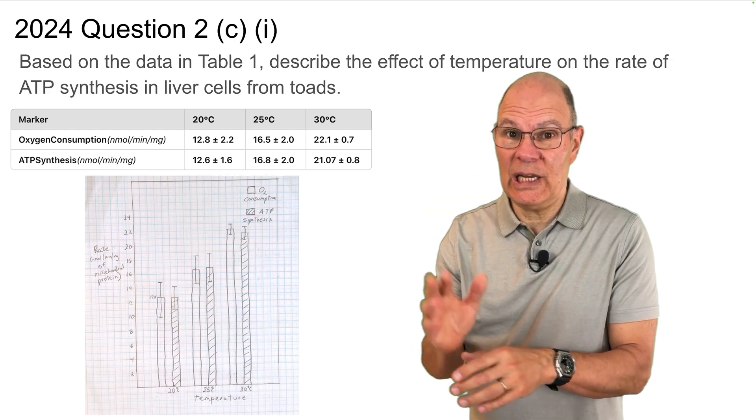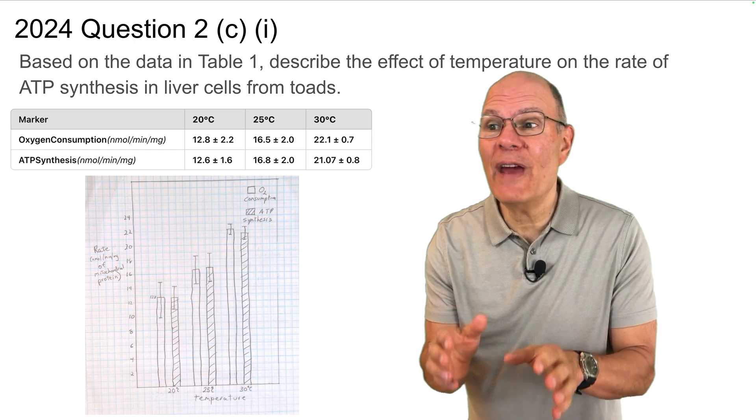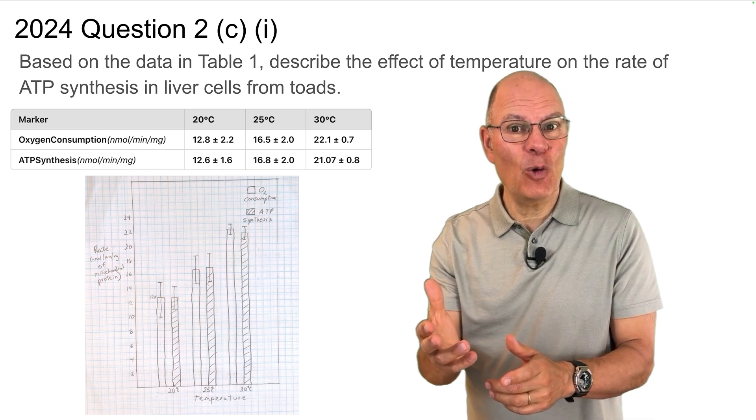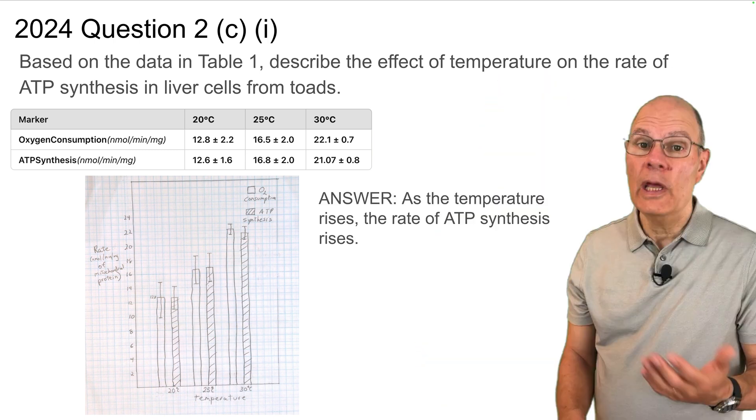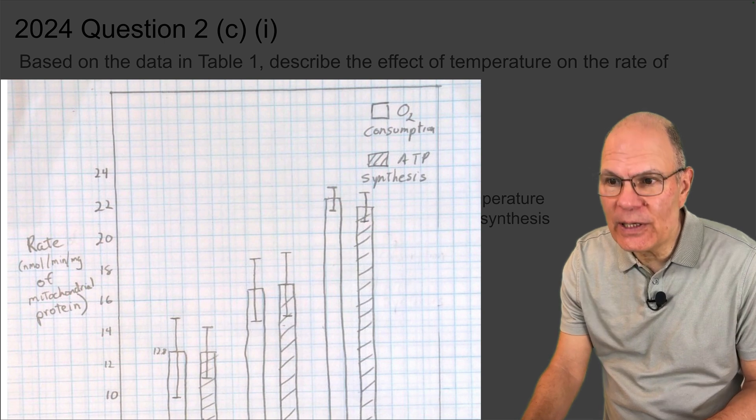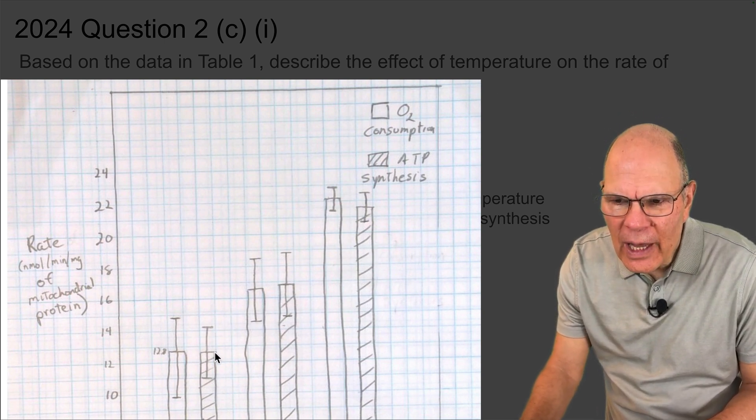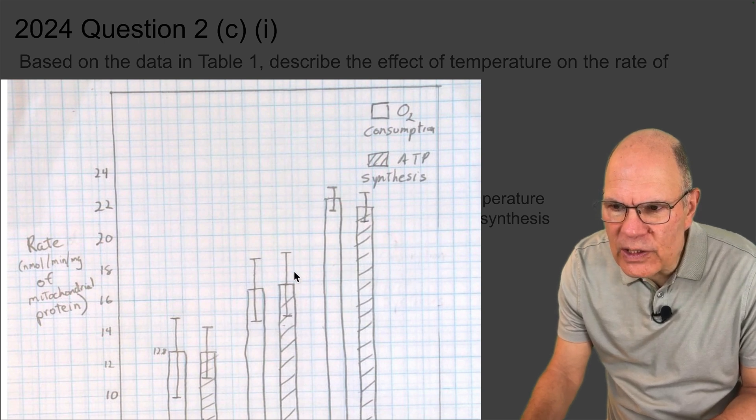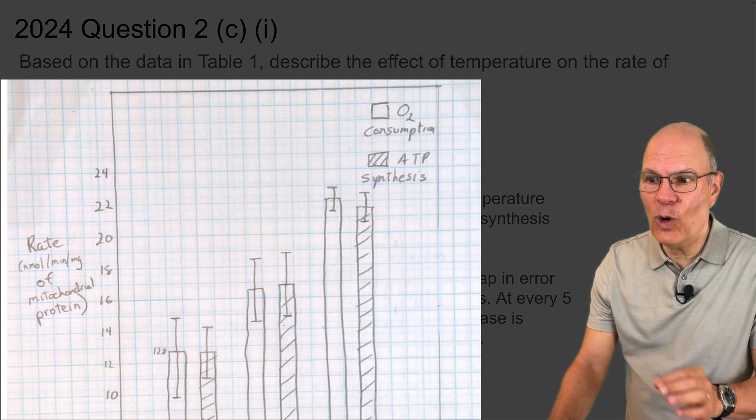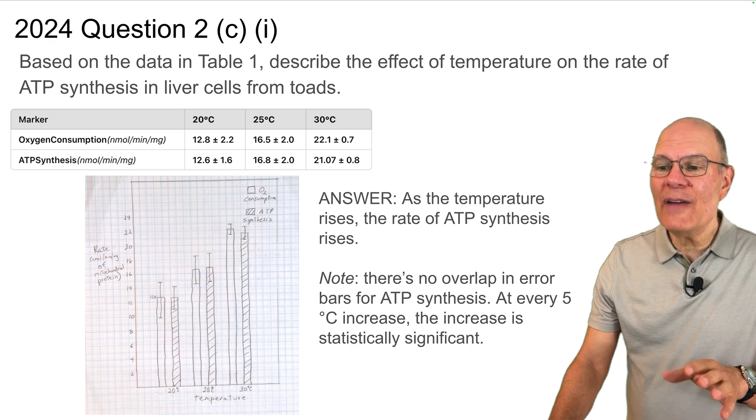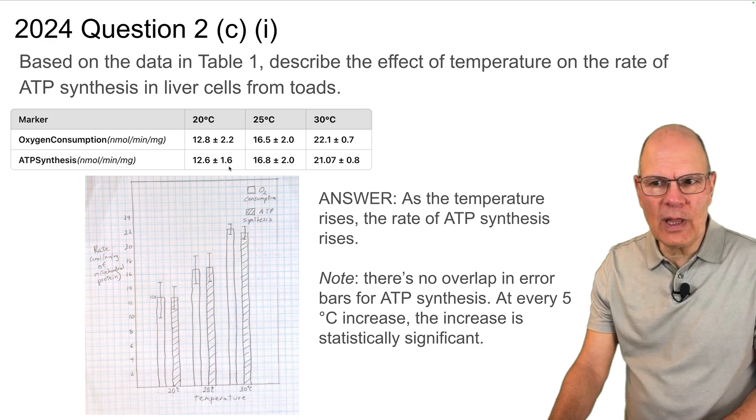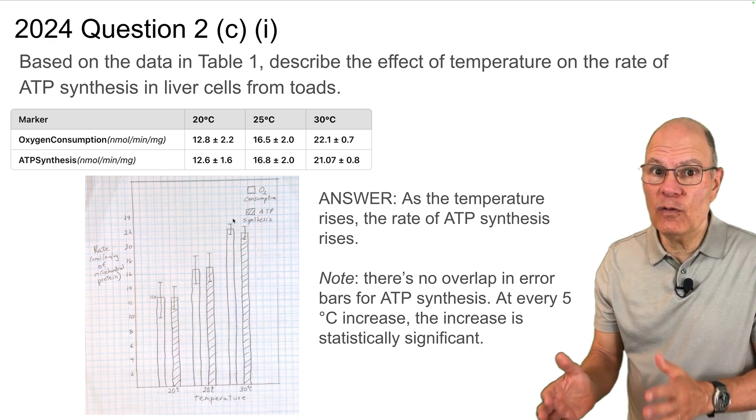Question 2C, Part 1. Based on the data in Table 1, describe the effect of temperature on the rate of ATP synthesis in liver cells from toads. Go ahead and answer the question, and then you can see my answer. Here's the answer. As the temperature rises, the rate of ATP synthesis rises. ATP synthesis are these lines with the hash bars in them. And we're looking at this, we're looking at this, and we're looking at this. And here's the important thing to note. There's no overlap in the error bars for ATP synthesis. At every five degree C increase, the increase is statistically significant. And you could tell that just by doing the math right over here, but it's easier to see once you've drawn the graph.